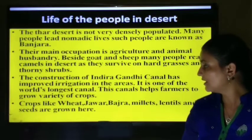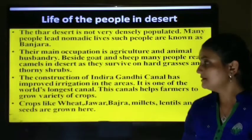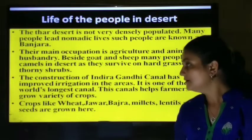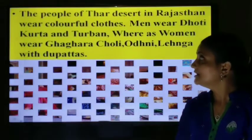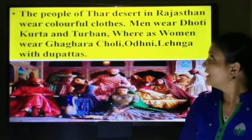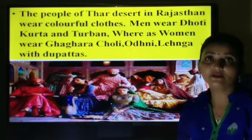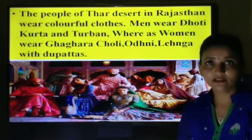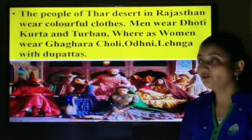The canal helps farmers grow a variety of crops like wheat, jowar, bajra, millet, lentils, and oilseeds. The people of the Thar Desert wear colourful clothes. Men wear dhoti, kurta, and turban, whereas women wear ghagra choli, odani, salwar, lehenga, and dupattas.